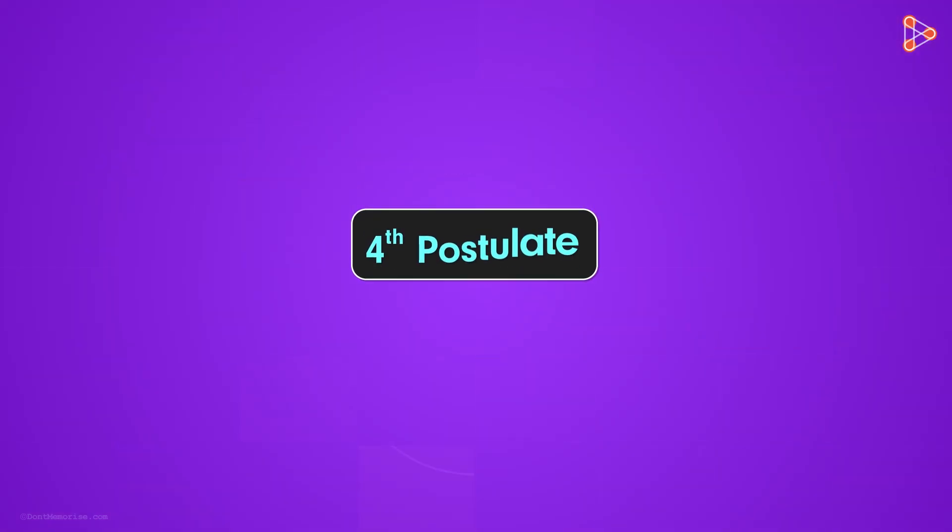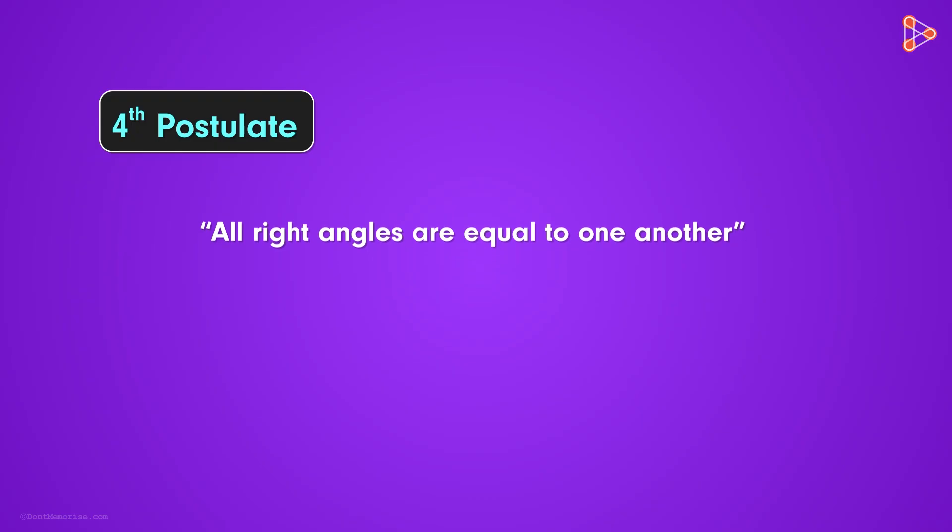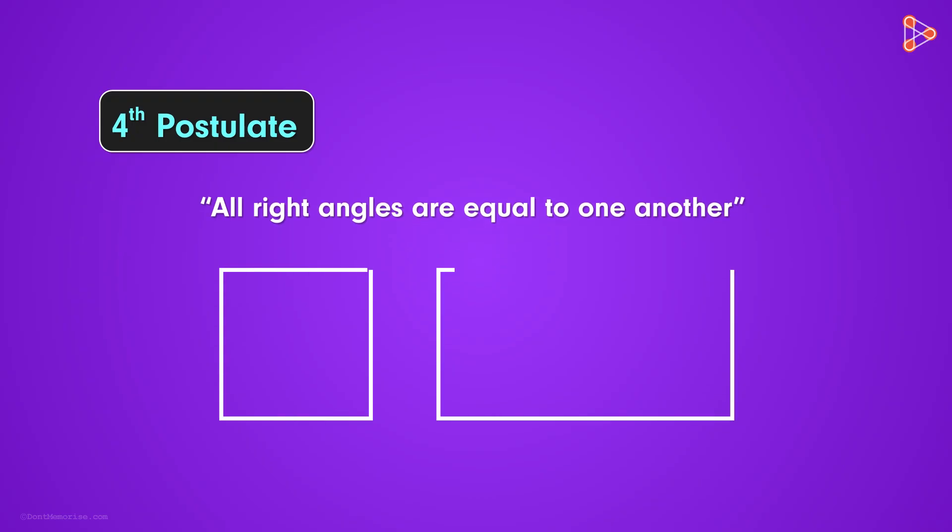The fourth postulate says that all right angles are equal to one another. Look at the square and a rectangle. We see that all the interior angles of the rectangle and the square are right angles. Therefore, an angle from a square will be equal to an angle from a rectangle.